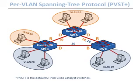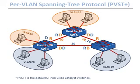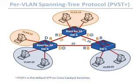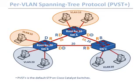For VLAN 20, things look different. Switch B is the root bridge for VLAN 20, so its ports are designated forwarding. Switch A and switch C choose their own root ports. On the trunk between switch A and switch C, one port must be blocking and one designated. If switch A has a lower priority or MAC address than switch C, switch A gets the designated port and switch C gets the blocking port — breaking the loop for VLAN 20. Now traffic between VLAN 20 hosts can flow freely through the trunk that carries VLAN 20.